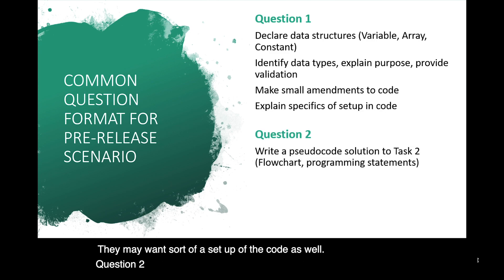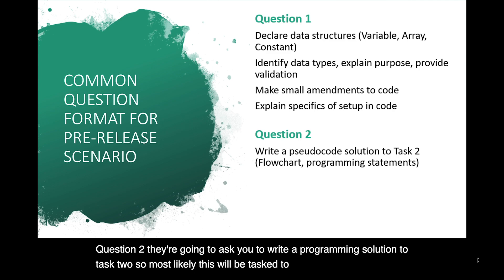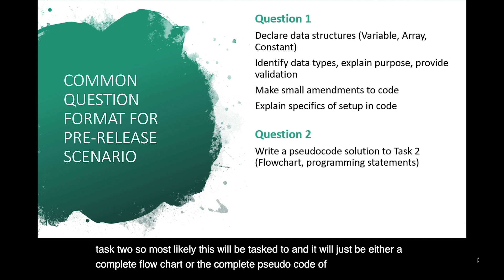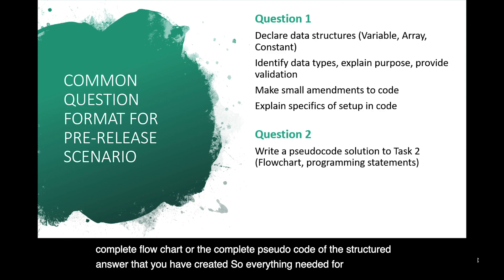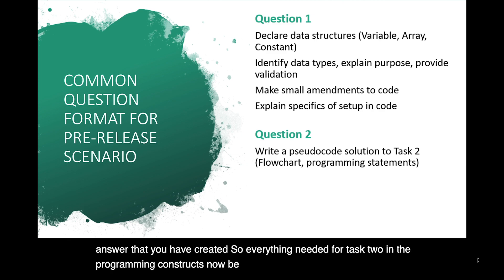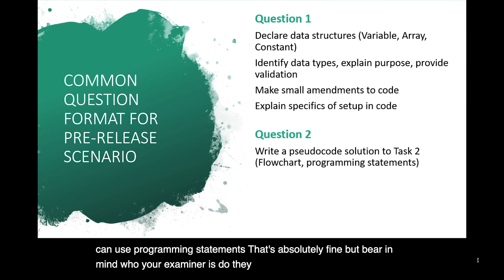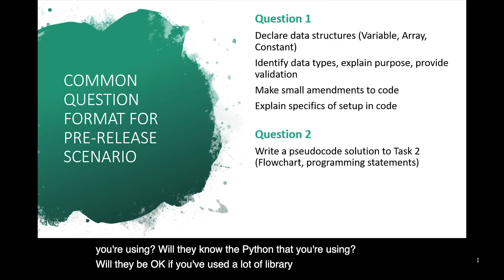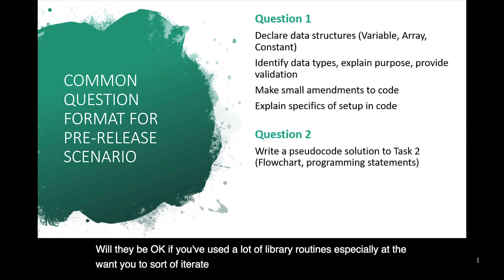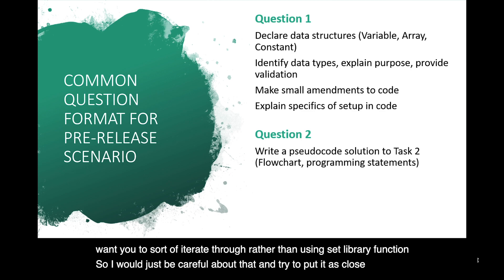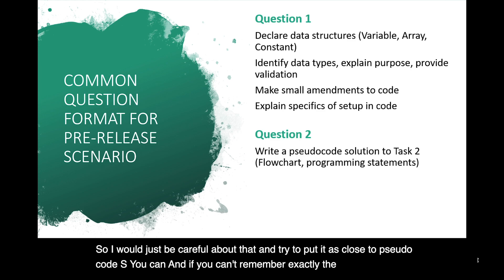Question two, they're going to ask you to write a programming solution to task two. So most likely this will be task two, and it will just be either a complete flowchart or the complete pseudocode of the structured answer that you have created. So everything needed for task two in the programming constructs. Now be careful when you complete these. You can use programming statements, that's absolutely fine, but bear in mind who your examiner is. Do they know the Java that you're using? Will they know the Python that you're using? Will they be okay if you've used a lot of library routines, especially if they want you to sort of iterate through rather than using set library functions? So I would just be careful about that and try to put it as close to pseudocode as you can. And if you can't remember exactly the pseudocode, put in the actual programming code.